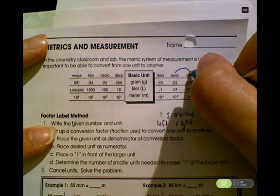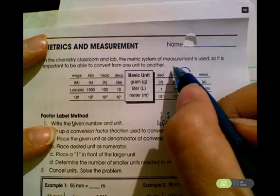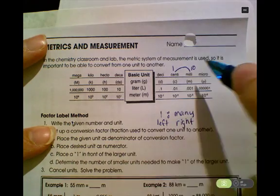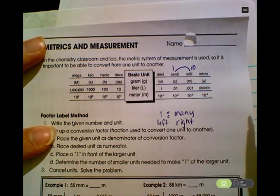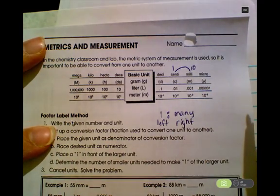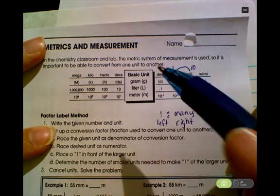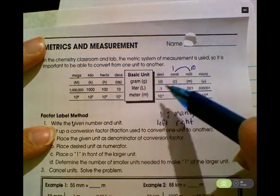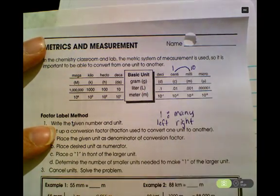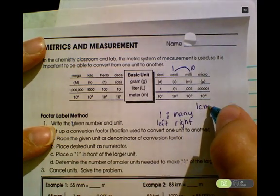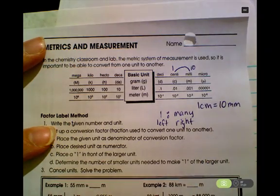So for example, here's centi and milli, so that means there's one centimeter for 10 millimeters, or there's one centigram for 10 milligrams. Whatever your base unit is—meter, liter, or gram—one centi is 10 millis. They're next door neighbors. One centimeter, for example, is 10 millimeters, probably one that you already know.